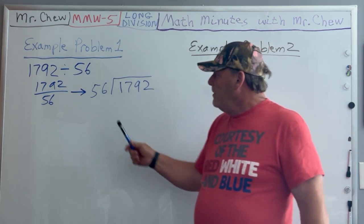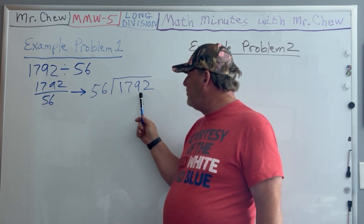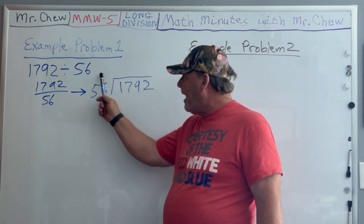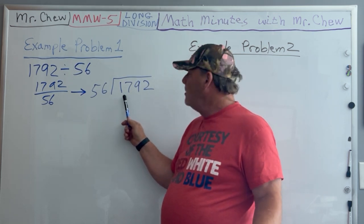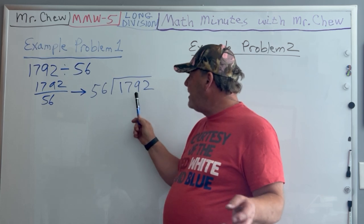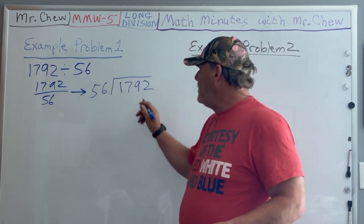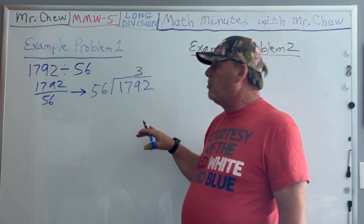If I take 56 and divide it into 1792, I have to ask how many times will 56 go into 1? It won't. Then 17? It won't. But 179 it will. How many times? It's gonna go three times.